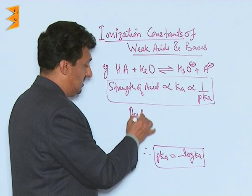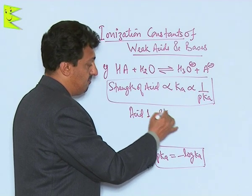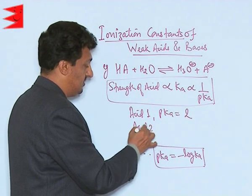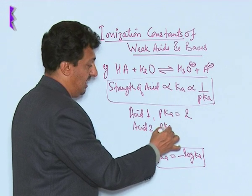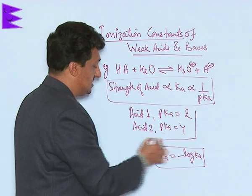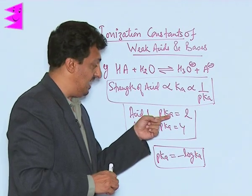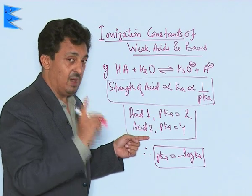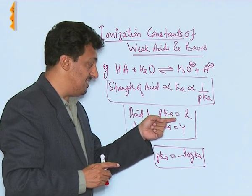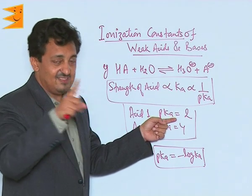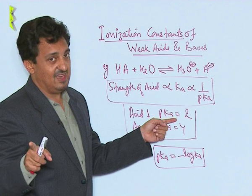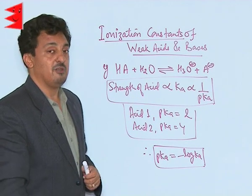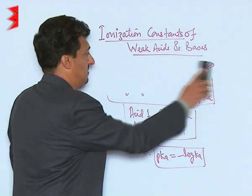For example, if acid 1 has a pKa of 2 and acid 2 has a pKa of 4, which is the stronger acid? It is acid 1, because the smaller the pKa, the larger is the Ka, and a larger Ka means a stronger acid.